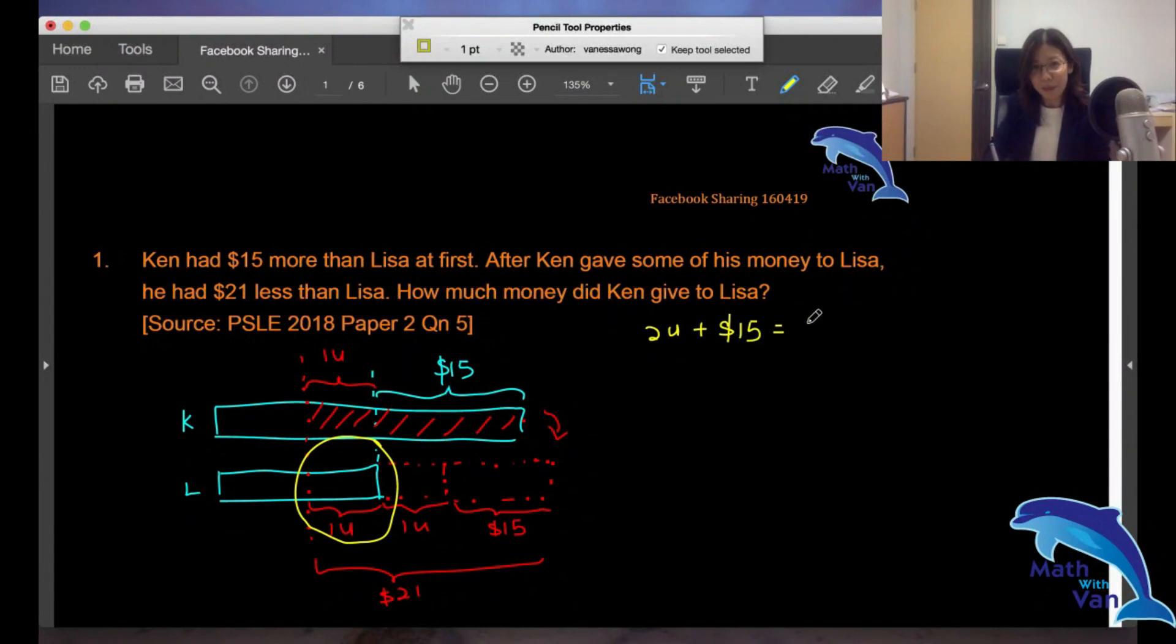The answer is, you can see, this $6. So one unit is $3. Remember what was given away? $3 plus the $15.